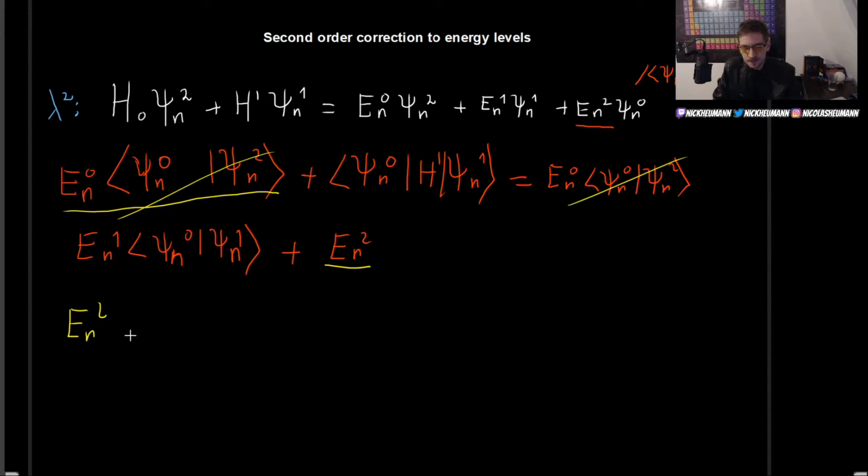So let us now write it all by itself. So E_n^2, this is going to be, well, this part right here. So Psi_n^0, Hamiltonian of this perturbation, Psi_n^1, minus E_n^1, Psi_n^0, Psi_n^1. Okay, so let us now take a look at this. Well, what exactly are all of these things?